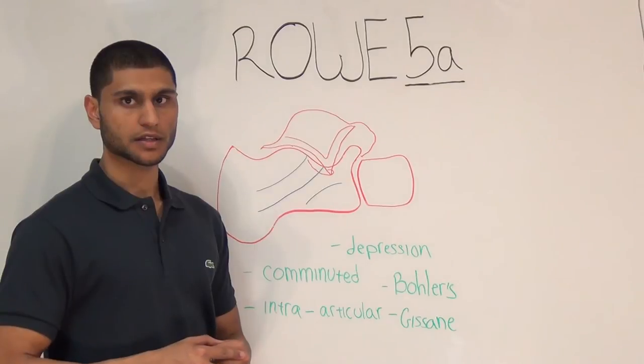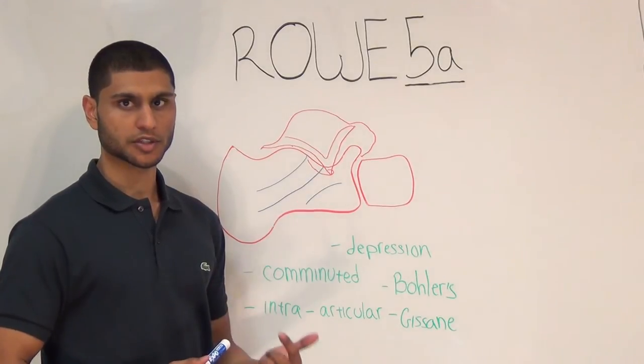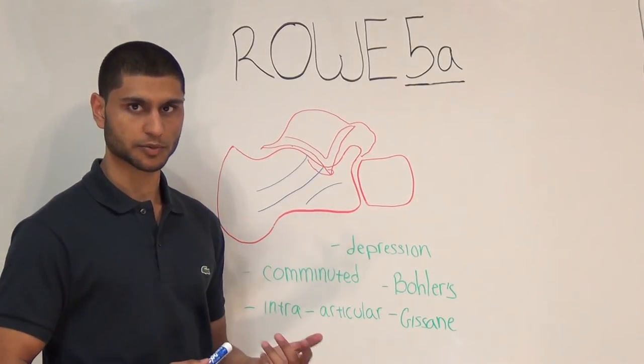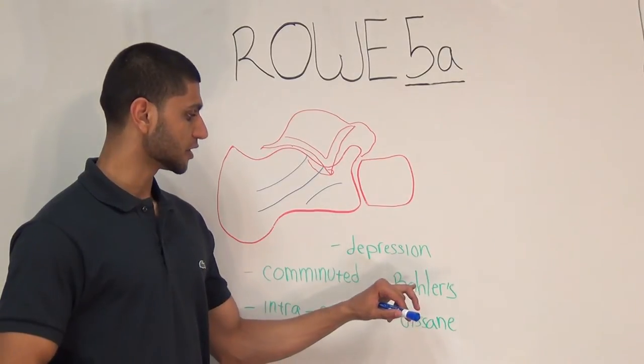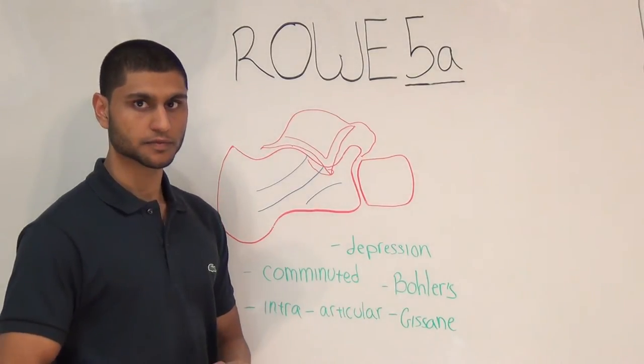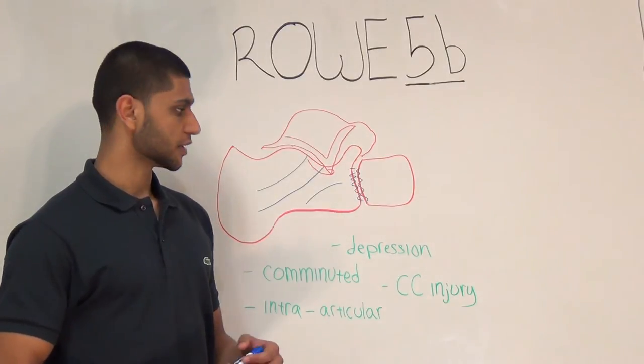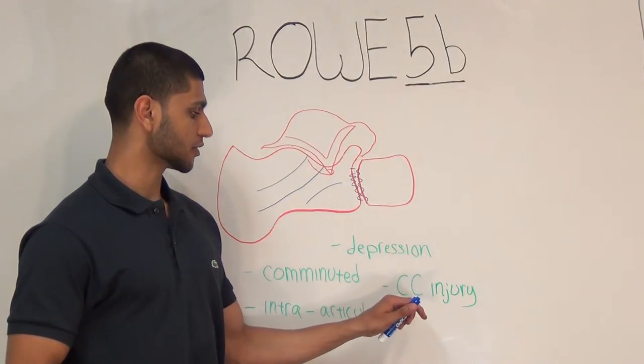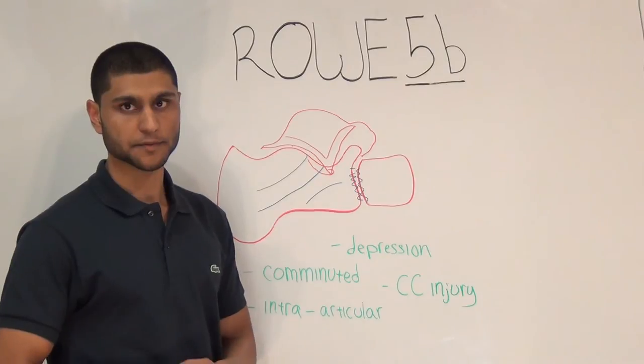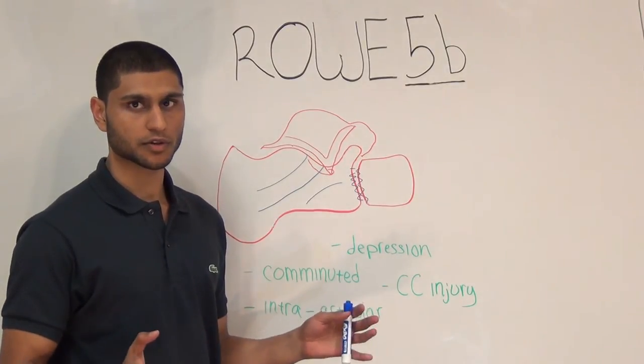Rowe 5a is a comminuted intra-articular fracture with subtalar joint depression, so you will see a decrease in Bohler's angle. Rowe 5b is the same as 5a, except this time you also have the calcaneal cuboid joint injured, and that completes the Rowe classification.